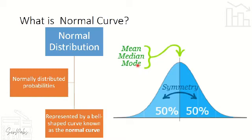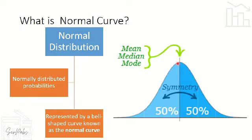Before we go on with the z-score proper, let's review what we mean by a normal curve. A normal curve is the graph that represents a normal distribution. A normal distribution is a normally distributed probability — half of the given probabilities are higher than the mean and half are lower than the mean. The center of the curve pertains to the mean, which can be the mean, median, or mode. This normal distribution is represented by a bell-shaped curve, also known as the normal curve.